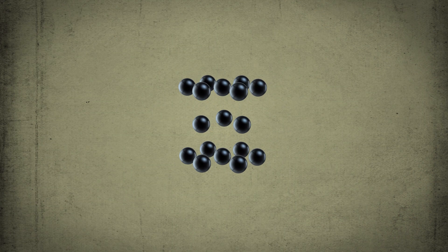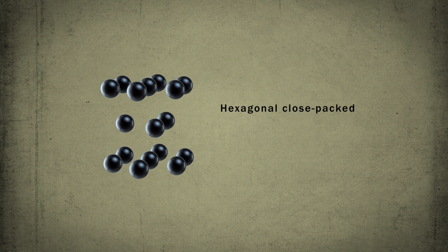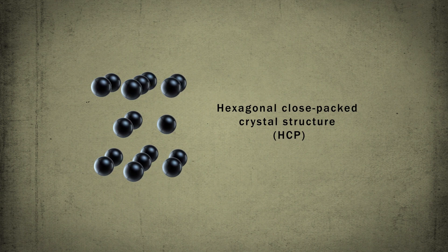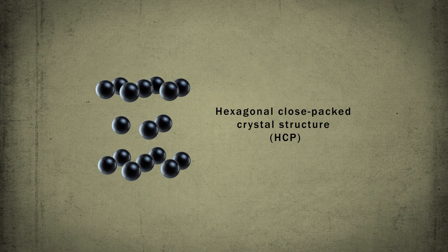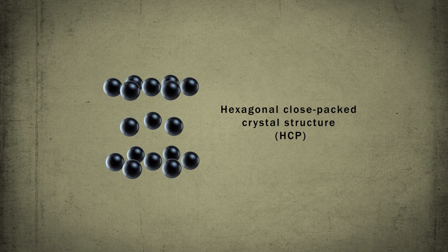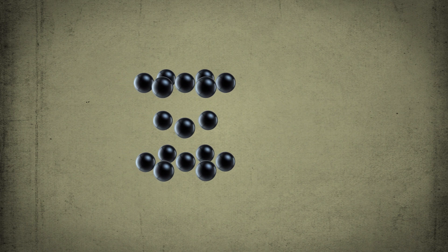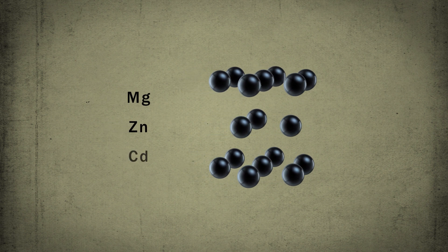The third crystal structure to be discussed is termed hexagonal close-packed crystal structure, briefly HCP. Atoms are located at the vertices and centers of the basal planes of a hexagonal prism and three atoms in the center of the prism volume. This type of structure is typical for magnesium, zinc and some other metals.